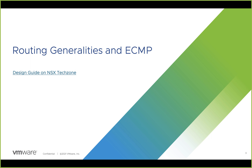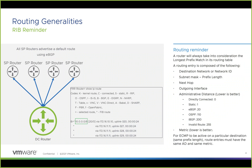Let's talk about routing generalities and ECMP. When multiple routes with an identical cost are received from different next hops and multiple uplinks, we can leverage ECMP and load balance traffic across multiple uplinks. It is critical to remember that for ECMP to be active on a particular destination, the route entries must have the same administrative distance and the same metric. The same administrative distance means the route must be learned by the same routing protocol — for example, the administrative distance for EBGP will not be the same as for OSPF.